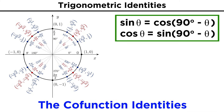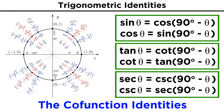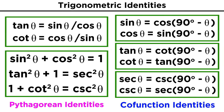Likewise, the cosine of theta is equal to the sine of 90 minus theta. And because of these identities, we can also write similar ones relating tangent and cotangent, as well as secant and cosecant. Let's quickly list the basic identities we have highlighted in this clip for ease of memorization. Once you've properly absorbed these, let's check comprehension.